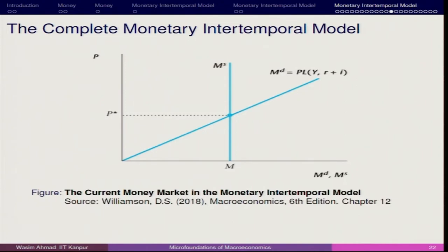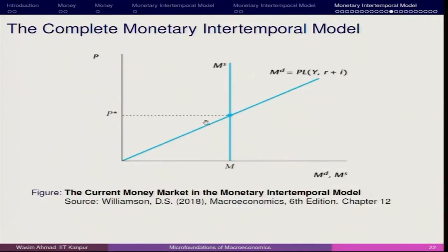That is why, whenever we have inflationary pressure in the economy, we see the central bank coming into the picture. Whenever there is a rise in inflation in a normally functioning economy — not the abnormal pandemic situation — the rate of interest also increases. To fully understand the monetary intertemporal model, you have to introduce two more agents: how the aggregate economy is functioning and how the labour market is reacting.